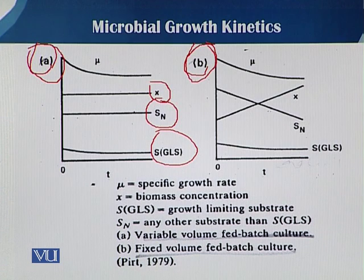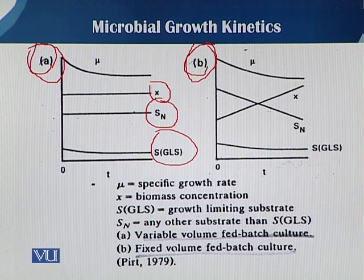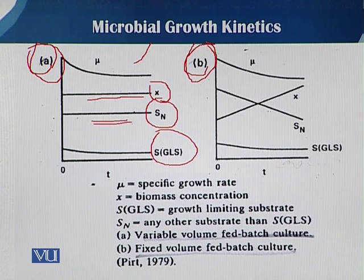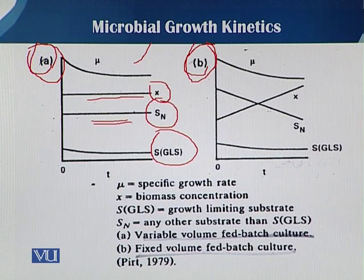During variable volume fed batch, there is a small drift in the mu line when we start the feeding, and then it becomes constant. X remains constant because D is equal to mu, so that always remains constant. It is only disturbed when the dilution or flow rate is disturbed. SN remains constant because it has no utilization or effect, and the whole strategy of feeding in fed batch depends on those substrates we call GLS — growth limiting substrate.